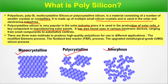Polycrystalline silicon has found uses in various electronic devices ranging from small components to automotive controls. It is also a key component in manufacturing solar cells and solar panels. There are three main methods to produce high quality polysilicon: the modified Siemens process, the fluidized bed reactor (FBR) process, and the upgraded metallurgical grade (UMG) silicon process.